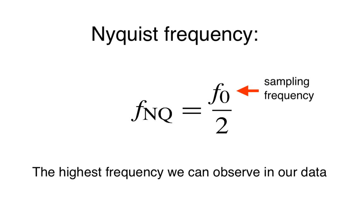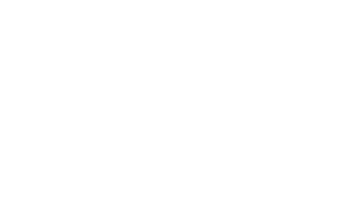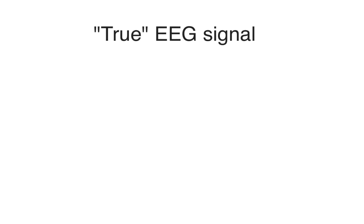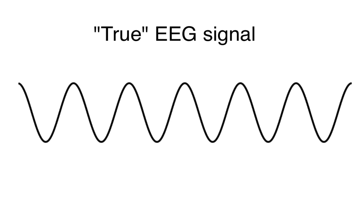The Nyquist frequency is the highest frequency we can possibly hope to observe in our data. To illustrate this, let's consider a true EEG signal that consists of a very simple time series, a pure sinusoid that oscillates at some frequency called Fs.